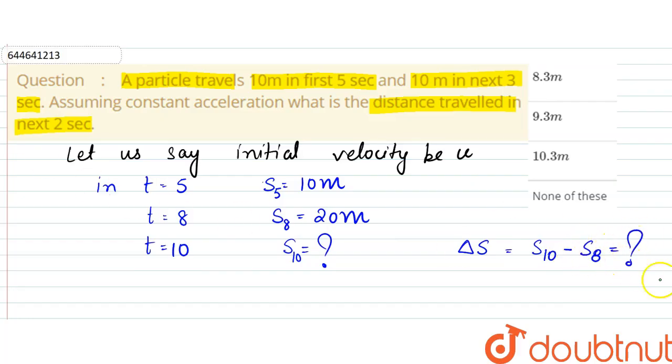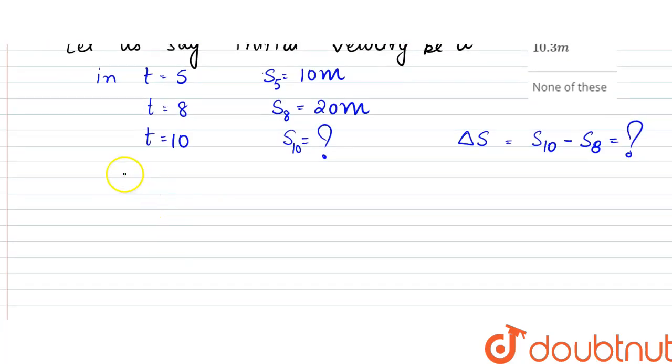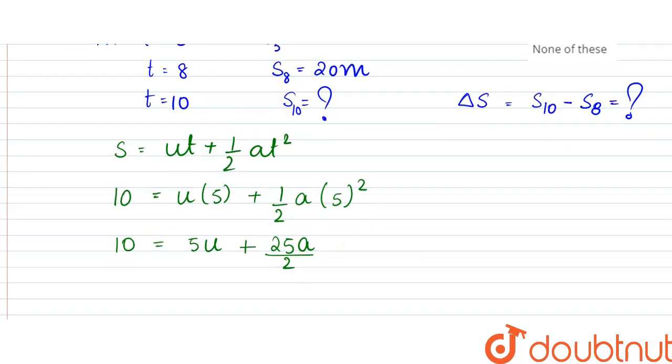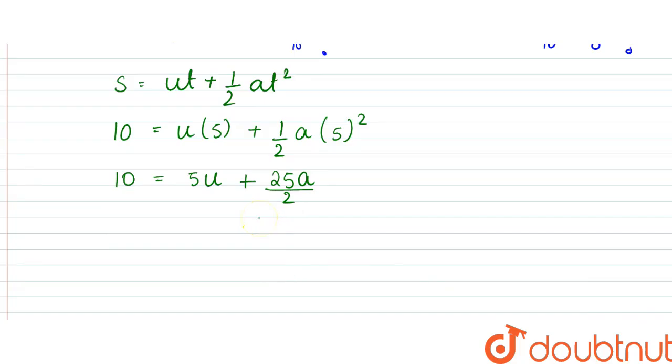In first situation we can use equation s equals ut plus half at square. So the distance was 10, which is equal to u into 5 plus half into a into 5 square. So 10 is equal to 5u plus 25a by 2.